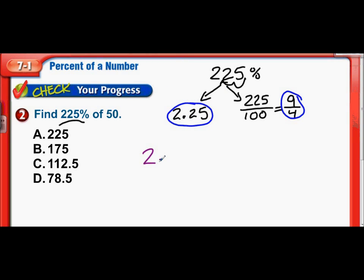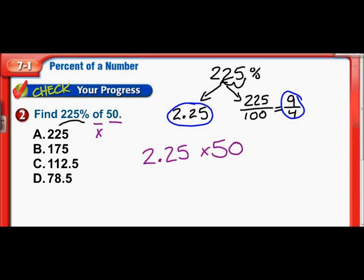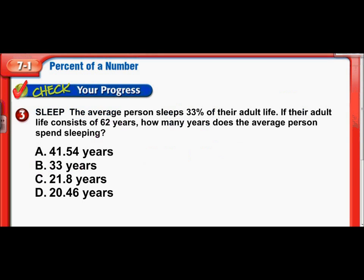So, my new problem is 2.25 times, because of means to multiply, times 50. So, here we go. 2.25 times 50. Let's get that calculator back up. So, we have 2.25 times 50. And there it is, 112.5. There we go. 112.5. All right. Let's move on to our next one.